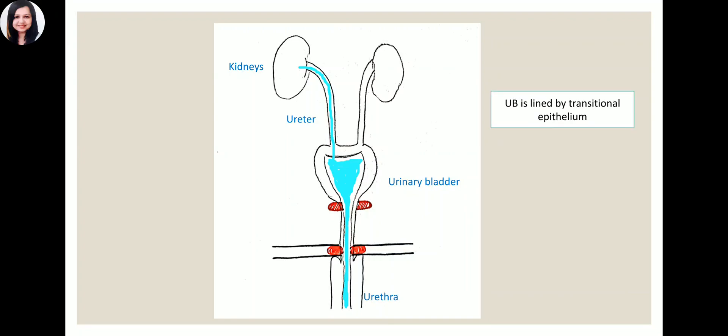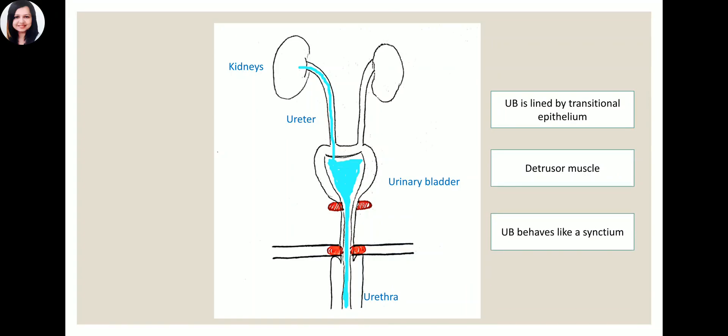The urinary bladder is a hollow organ lined by transitional epithelium, which can stretch enormously without tearing, allowing it to hold a lot of urine. The wall of the urinary bladder has a smooth muscle called the detrusor. The muscle fibers are interlaced with one another via low resistance junctions, so the bladder behaves like a syncytium — a single unit. When one part of the bladder contracts, the impulse immediately spreads to other parts and all contract as a single unit.